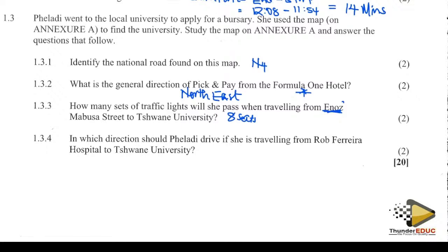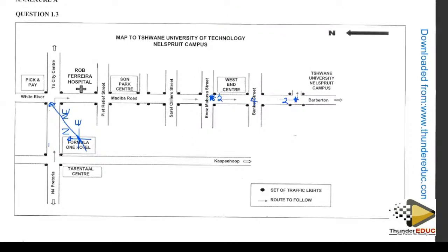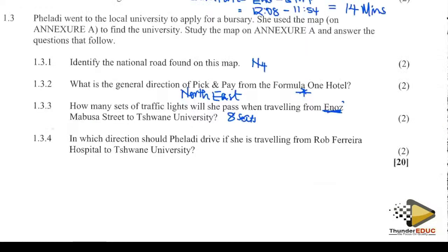Eight sets. Which direction should one drive if travelling from Robins Ferry Hospital to the university? The person will take the southern direction, because this is north and south is the other sign — so it will be the southward direction.